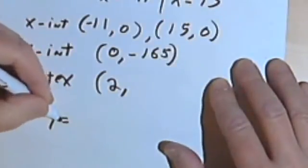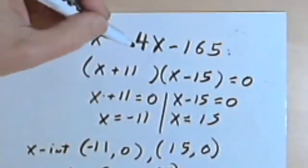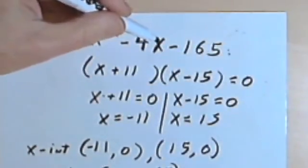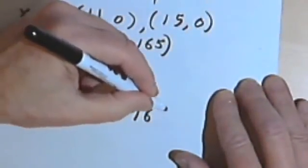So y equals 2-squared, which is 4, minus 4 times 2, which is negative 8, minus 165.